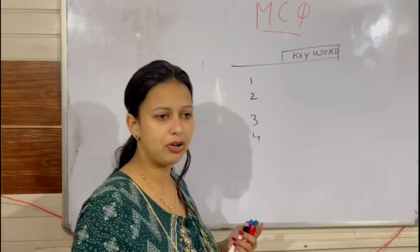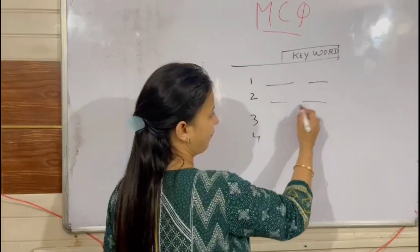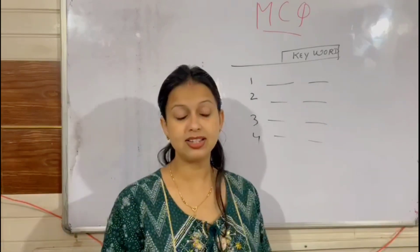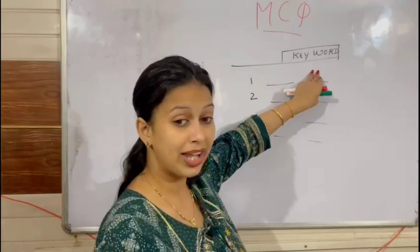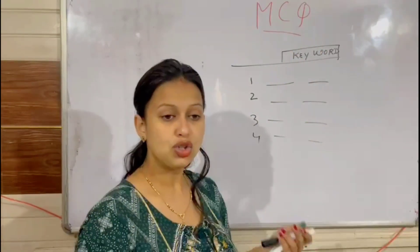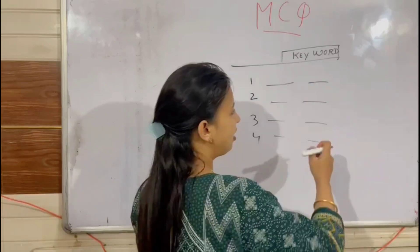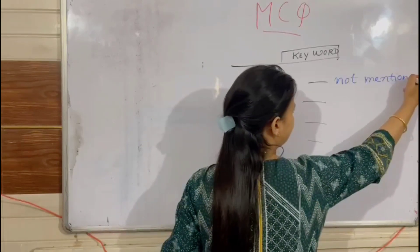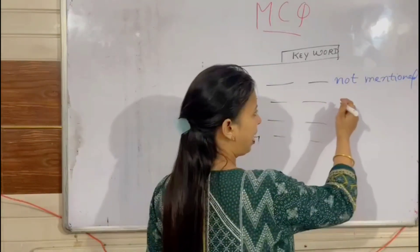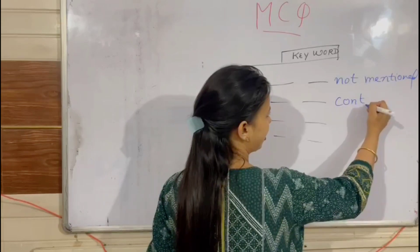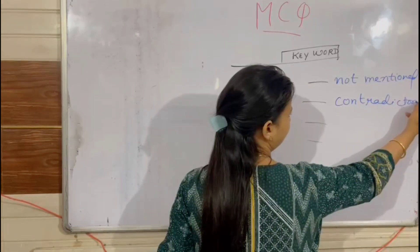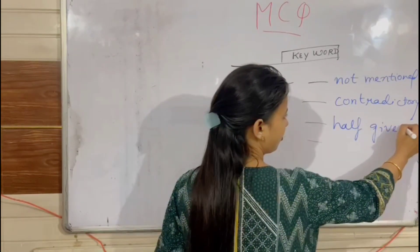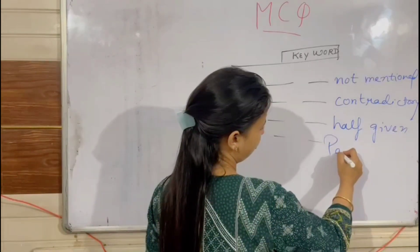How do you need to read the 4 options? Into 2 parts. The strategy is: when you locate the keyword in the paragraph, you will observe that one part will not be mentioned in the paragraph, one part will be contradictory, one part will be half given, and one part will be paraphrased.